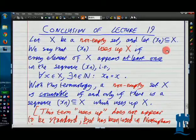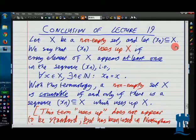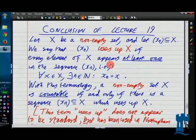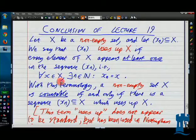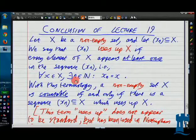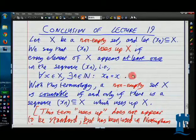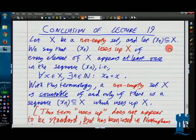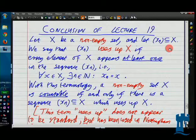So if you've got a sequence Xn in a set X, we'll say it uses up X if every element of X appears at least once in the sequence, which you could do in symbols this way. For every x in X, there should exist an n in the natural numbers so that Xn equals x. I did insist the sequence is a subset of X. You could probably make it even more general than that, but I think that would be going a step too far.